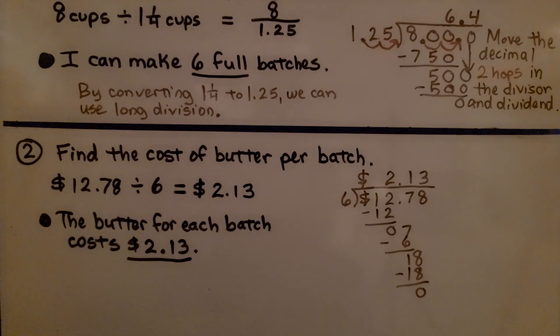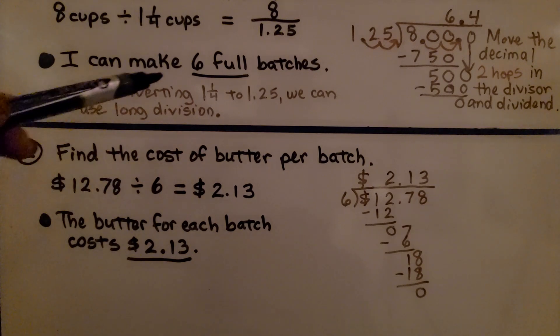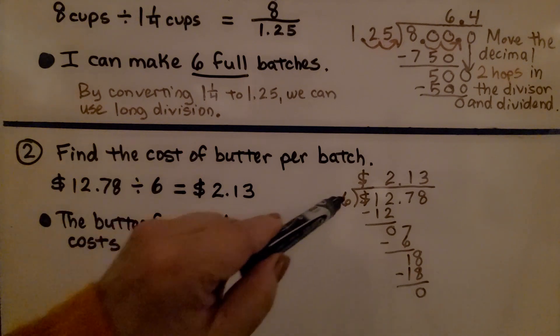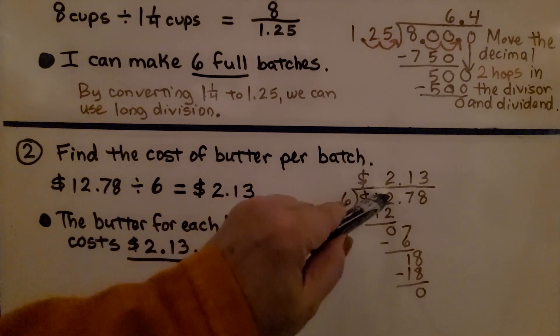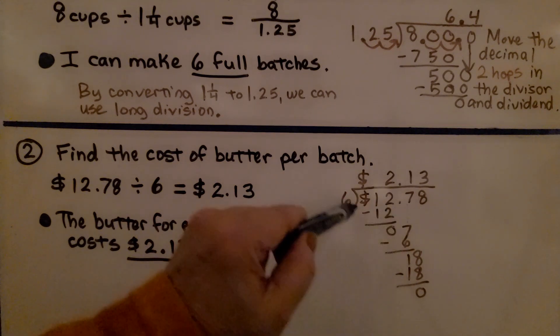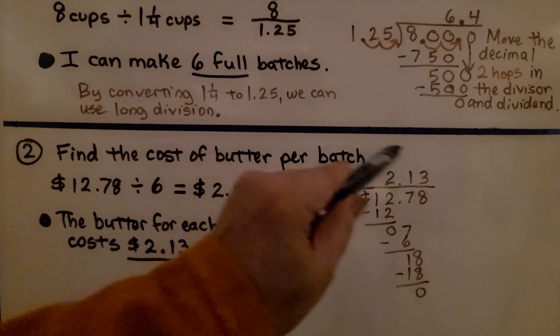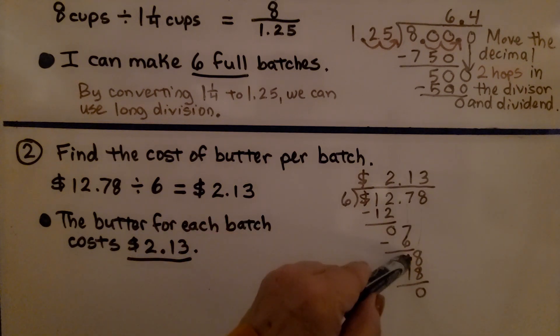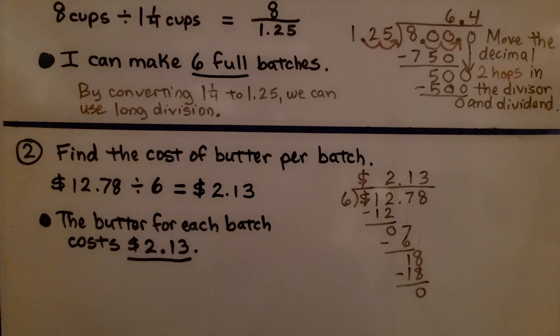We also needed to find the cost of butter per batch. It told us that it was $12.78 for that 4 pounds of butter, that 8 cups. We know we can do 6 full batches, so we're going to divide the $12.78 by 6. 6 fits into 12 two times, 6 times 2 is 12, we subtract and get 0. The 7's turn to come down. 6 fits into 7 one time. We subtract and get 1. Now it's this 8's turn to come down, and 6 fits into 18 three times. We get $2.13 for the butter for each batch.